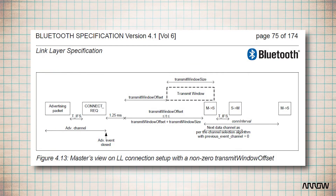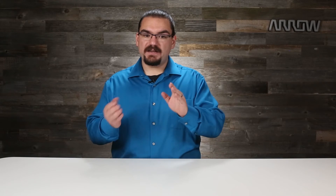Next up are the transmit window size and the transmit window offset. The transmit window starts at the end of a connection request packet plus an additional mandatory delay of 1.25 milliseconds, plus the transmit window offset. The offset can have any value from zero to the connection interval in multiples of 1.25 milliseconds. The window size must be a multiple of 1.25 milliseconds in the range of 1.25 milliseconds to the lesser of 10 milliseconds and the connection interval minus 1.25 milliseconds. The start of the first packet will be no earlier than 1.25ms plus the transmit window offset times 1.25ms, and no later than 1.25ms plus the transmit window offset plus the transmit window size, after the end of the connect request PDU transmitted in the advertising channel.